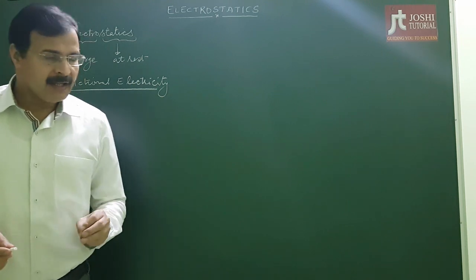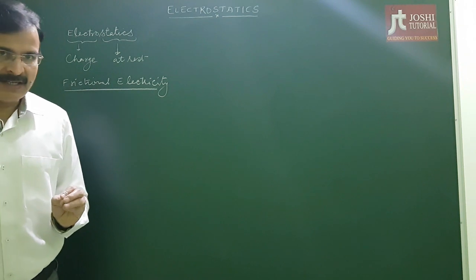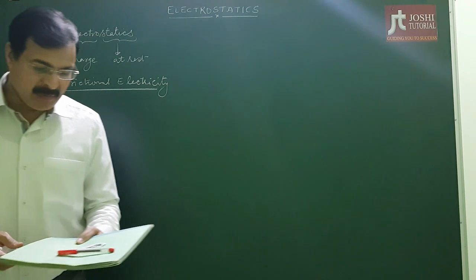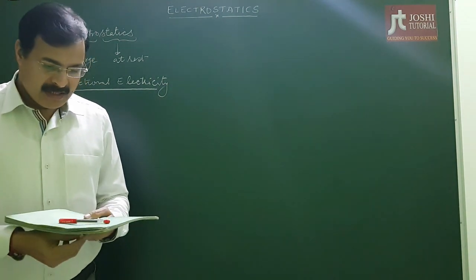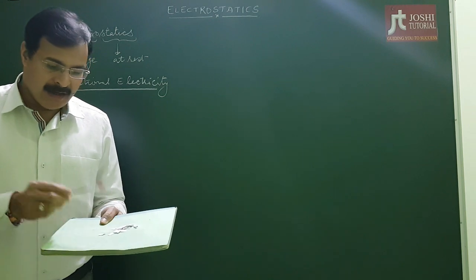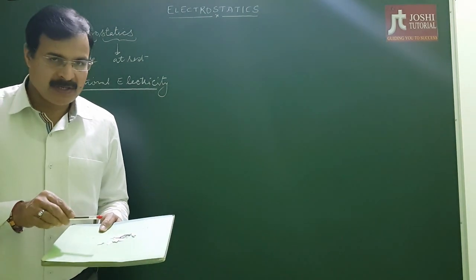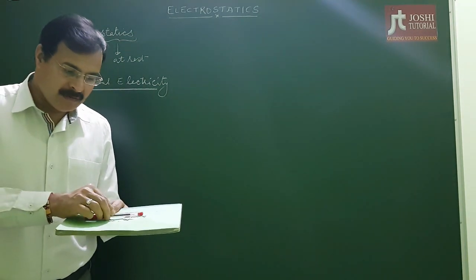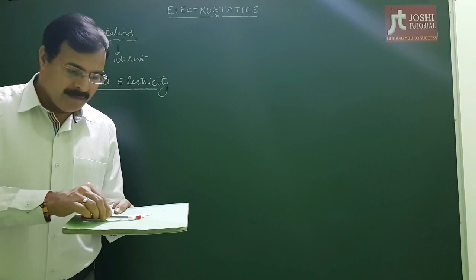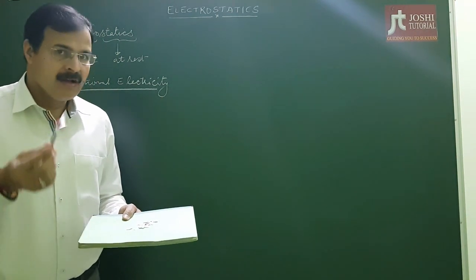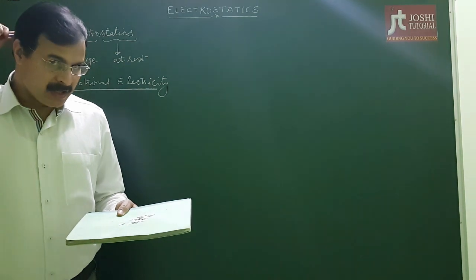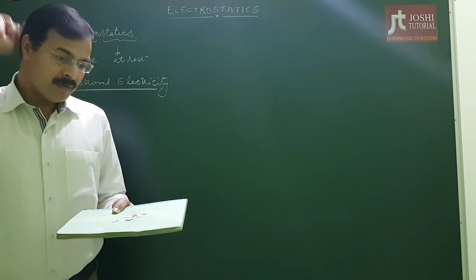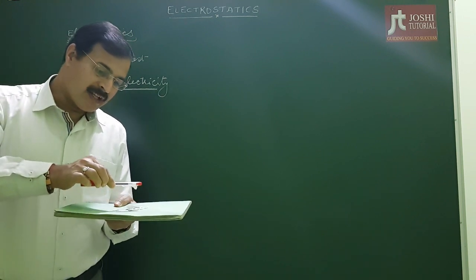Let's talk about what charge exactly is through a small experiment. Here we have small bits of paper and a plastic pen. If we bring the plastic pen near the small bits of paper, we observe that there is no attraction. But if we rub this plastic pen on dry hair and then bring it near the small bits of paper, we see that the paper is attracted.